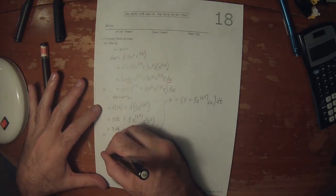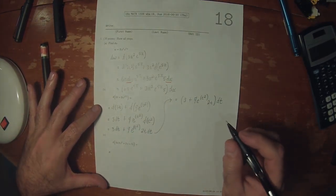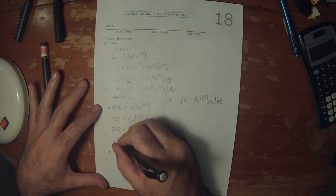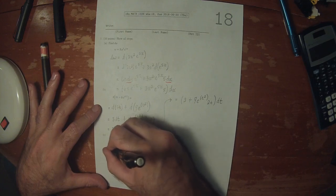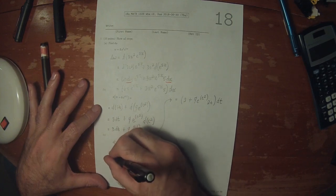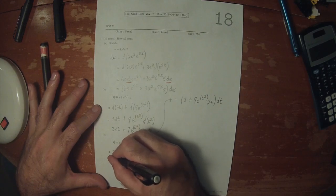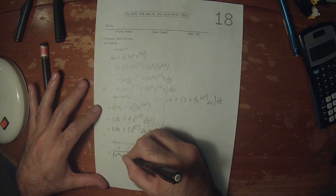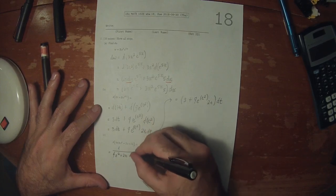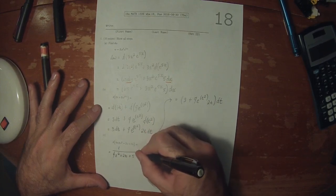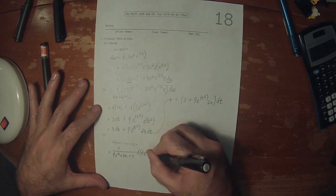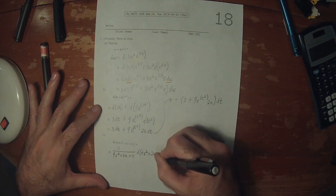And finally, the differential of this log function will be 1 over 4z squared plus 2z plus 5, multiplied by the differential of 4z squared plus 2z plus 5.